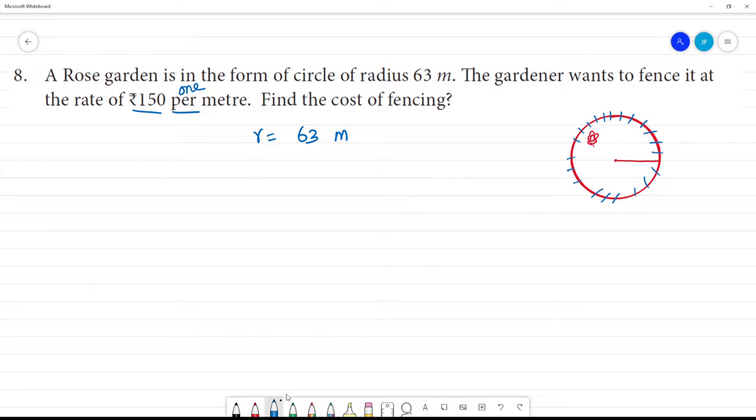Now we need the circumference. Circumference of the garden equals 2πr, which is 2 times pi times r.